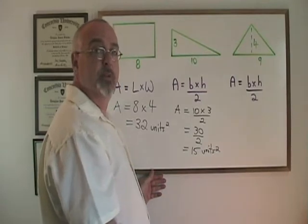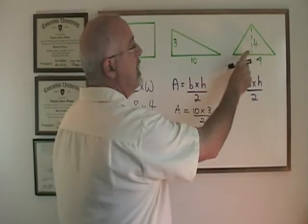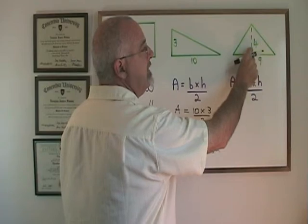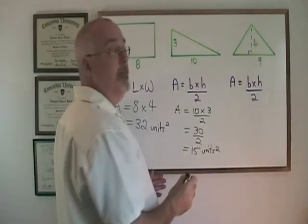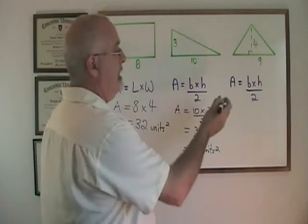A height has to go straight up perpendicularly from the base. So we have been given the information with a little dotted line that we have a height of 4. And we can fill in our formula.